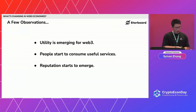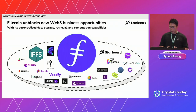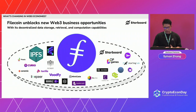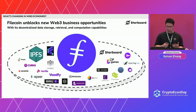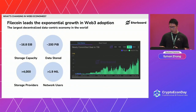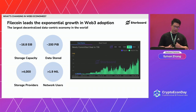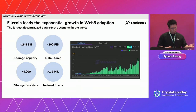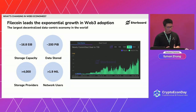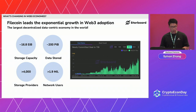Let me use Filecoin as an example. Filecoin is a really great example of a utility-driven token economy. It provides decentralized data storage, retrieval, and computation capabilities in a useful and efficient way, and therefore unlocks lots of new business opportunities that carry real utilities. Since its launch, Filecoin is leading the way for exponential growth in Web3 adoption. You can see these amazing metrics just under two years since mainnet launch: almost 17 exabytes of storage capacity, hundreds of petabytes of useful data stored on the network, over 4,000 storage providers, and over 1.9 million network users.